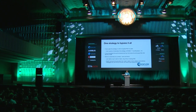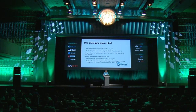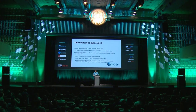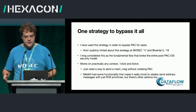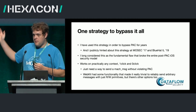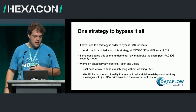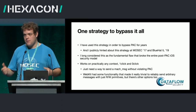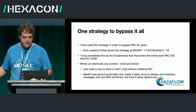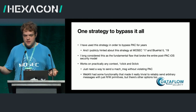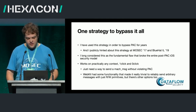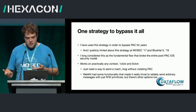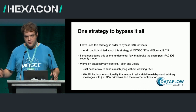I have actually used this MAC IPC strategy to bypass PAC for years. I publicly hinted about it at Mosec 2017 and Blue Hat 2019, and I long considered this the fundamental flaw of the post-PAC iOS security model — because it works everywhere. MAC messages and IPC are used in every process, one-click and zero-click. If you're able to derive a Mach message send primitive without violating PAC, you pretty much have full control over the process. WebKit specifically had functionality that made it really trivial to send arbitrary messages with just read-write primitives and a couple of JavaScript calls.